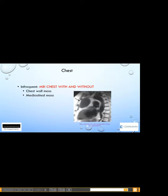It is infrequent that we do an MRI of the chest — other than cardiac — but we will do it with and without contrast for things like chest wall masses or mediastinal masses. In this example, there is a cystic lesion in the anterior mediastinum that turned out to be a thymic cyst.